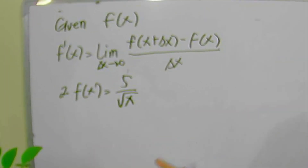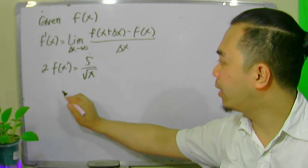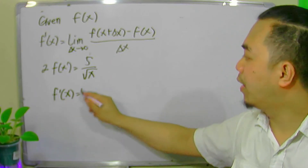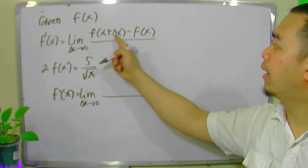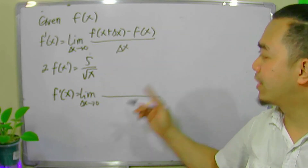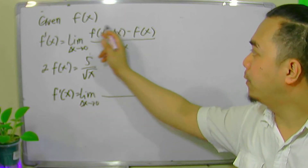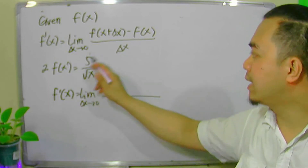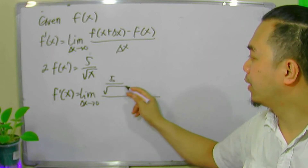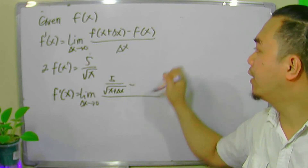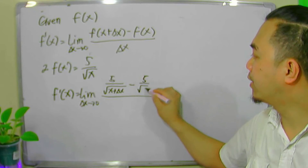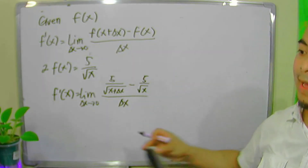Let's have another example. We have the function f of x equal to 5 over square root of x, and we want to compute for its derivative using the limit definition. To compute, we follow the formula. We start with the limit of f of x plus delta x minus f of x, all over delta x. We can integrate this directly — evaluating the function at x plus delta x gives us 5 over square root of x plus delta x.